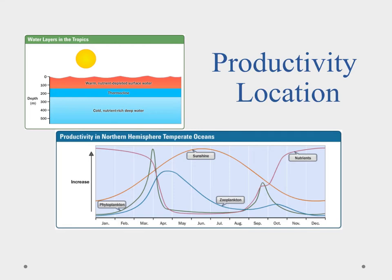Let's look at productivity by location — specifically photosynthetic productivity. In the tropics, we have warm, nutrient-depleted surface water with a thermocline — a temperature gradient — and then cool, nutrient-rich water below. That nutrient-rich water is blocked by the thermocline from reaching the surface. So even though there's a lot of sun and we'd expect a lot of photosynthesis, the nutrients that phytoplankton need have already been depleted, and we don't see a lot of photosynthetic productivity in the tropics.